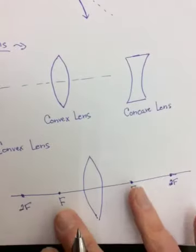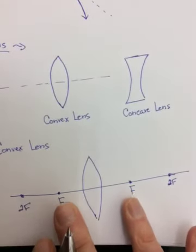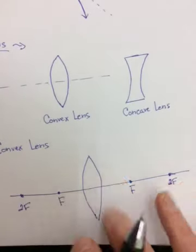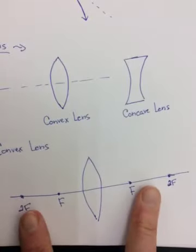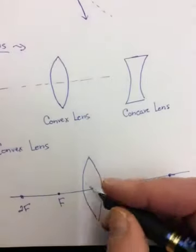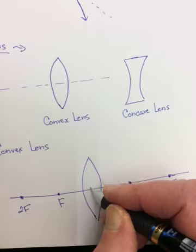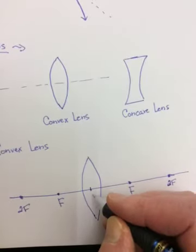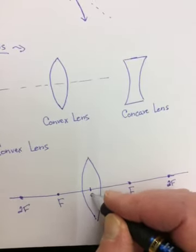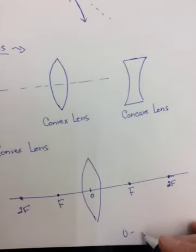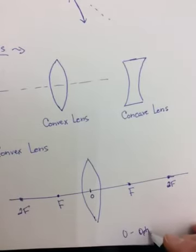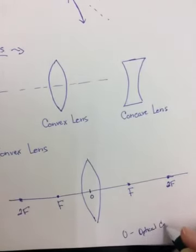So still a principal axis, still principal focus points, foci this time, and now the C's have become 2F. The one other point that you need to know for a lens is the center point, which is an O, and it's called the optical center.